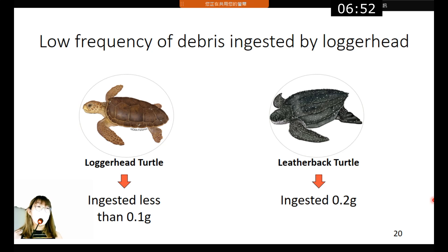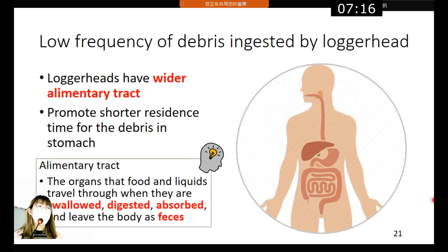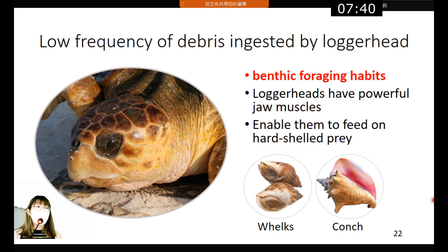We've covered debris ingestion by green turtles — what about loggerhead and leatherback turtles? In this study, loggerhead turtles showed only a fragment of plastic bags of less than 0.1 gram, and one of the two leatherback turtles ingested 0.2 gram of plastics. The reason is that loggerheads have a wider alimentary tract — also known as the digestive tract — which links from the esophagus to the anus, giving debris a shorter residence time in the stomach. Additionally, loggerheads have more powerful jaw muscles, enabling them to feed on hard-shell prey such as whelks and conch rather than jellyfish.